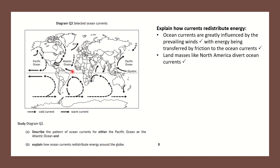The equatorial current would loop around the Earth at the equator if there weren't land masses in the way. South America deflects the equatorial current northwards, and North America deflects the Gulf Stream northwards as well. The key point to communicate is that land masses divert ocean currents, and you will need to name the land mass.